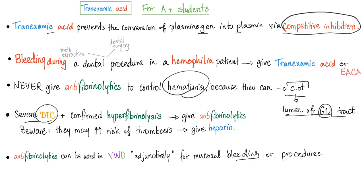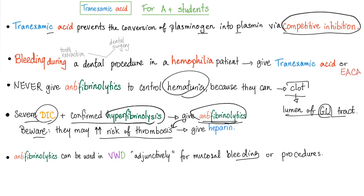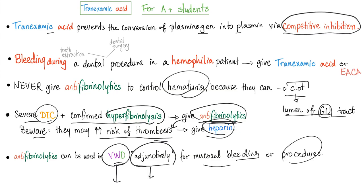In severe cases of DIC with confirmed hyperfibrinolysis, you can give anti-fibrinolytics. Beware: these anti-fibrinolytics may increase the risk of thrombosis, so if that happens, give heparin. Anti-fibrinolytics can also be used in von Willebrand disease adjunctively — it's not the main therapy, but it helps for mucosal bleeding or procedures.